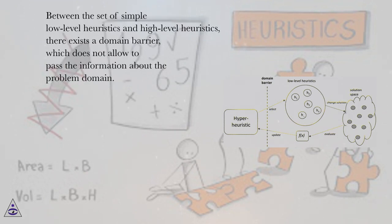Between the set of simple low-level heuristics and high-level heuristics, there exists a domain barrier which does not allow passing the information about the problem domain.